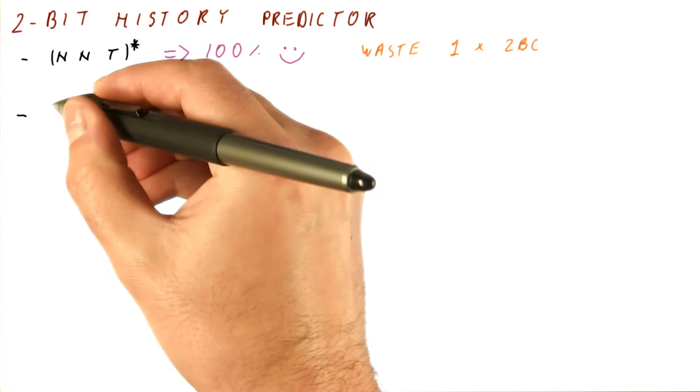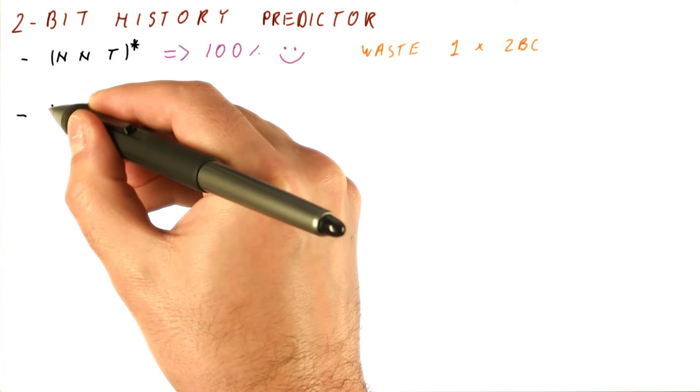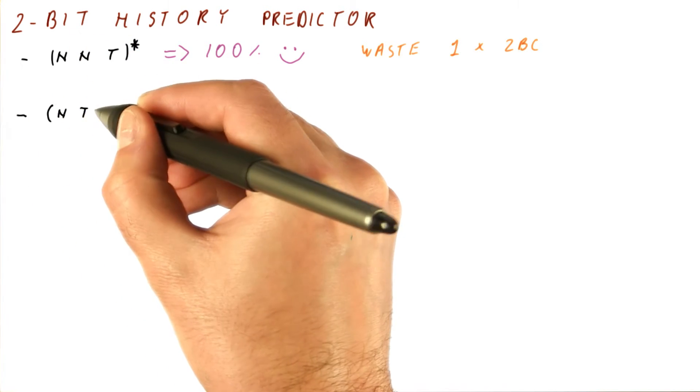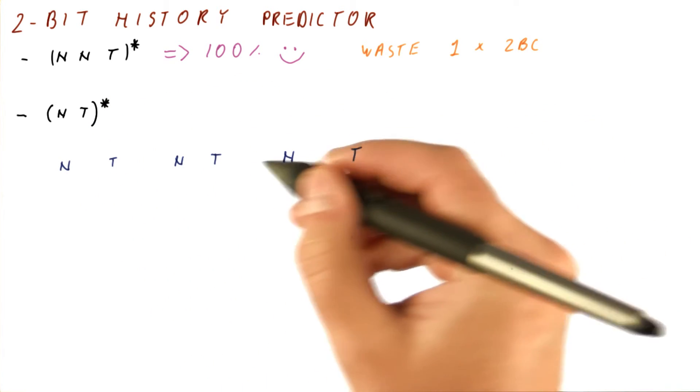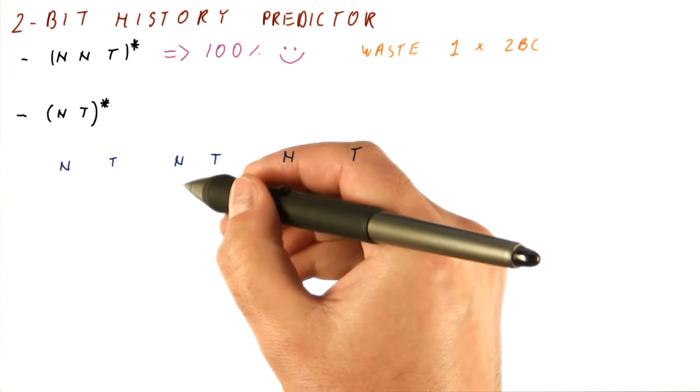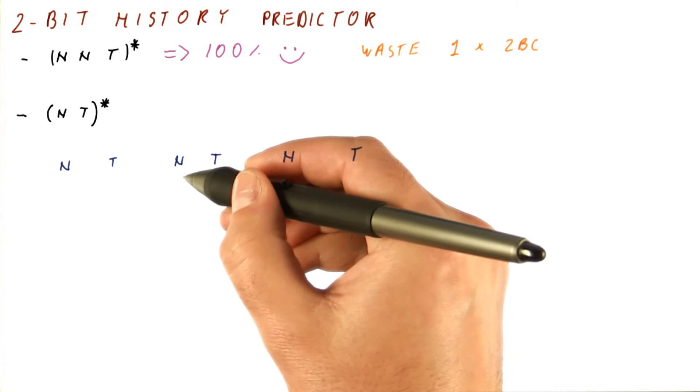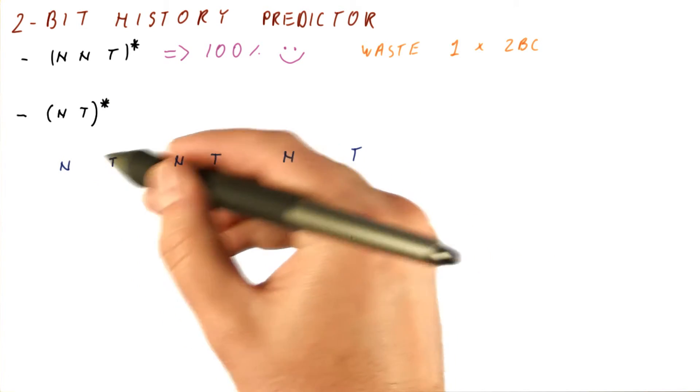Now let's see what happens if this same two-bit history predictor is trying to predict the alternating pattern: the not taken, taken, not taken, taken, and so on. For that pattern, when we are trying to predict this not taken here, we're seeing a history of 0, 1.